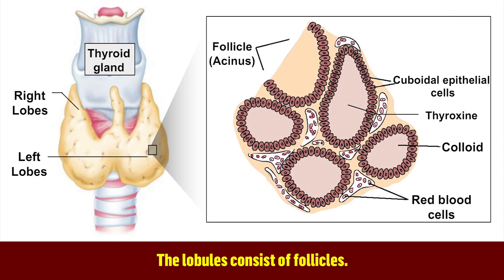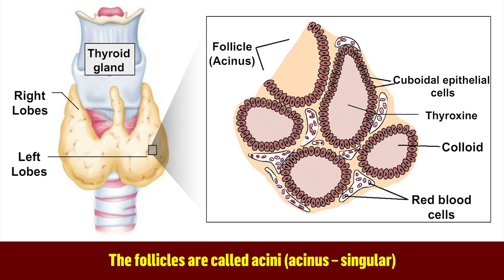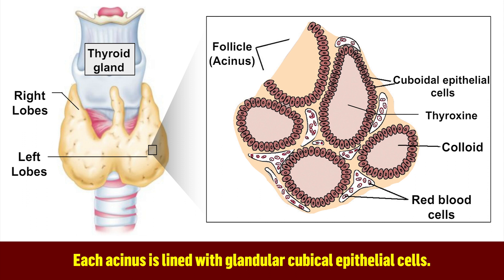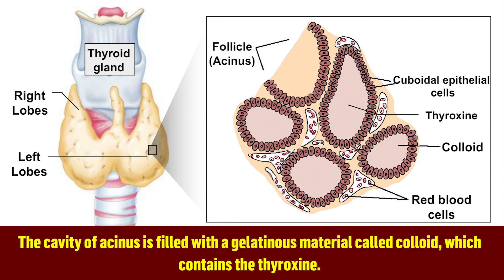The lobules consist of follicles, which are called acinus in the singular. Each acinus is lined with glandular cubical epithelial cells. The cavity of the acinus is filled with a gelatinous material called colloid, which contains thyroxin.